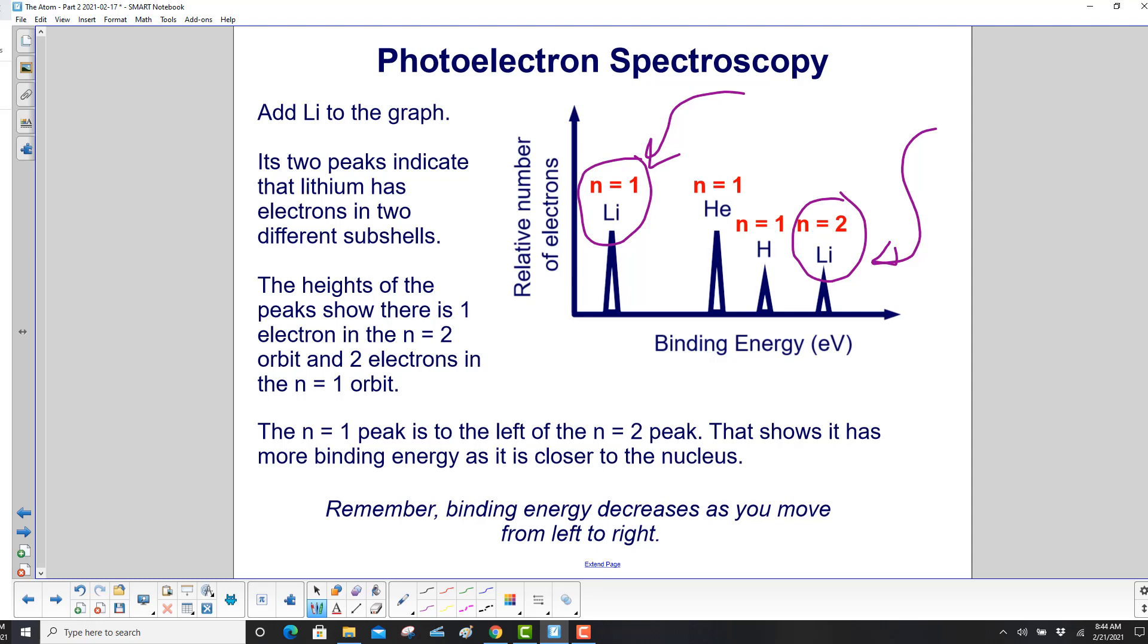The n equal 1 peak is to the left of the n equal 2 peak. That shows it has more binding energy as it is closer to the nucleus. Remember, binding energy decreases as you move from left to right and increases as you go from right to left.